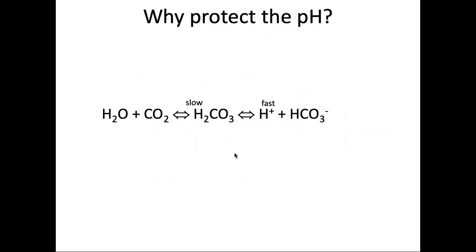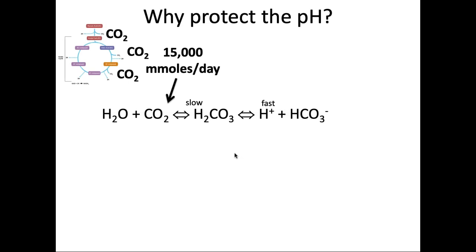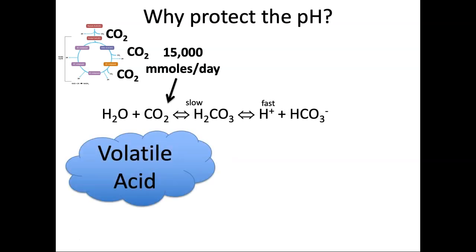Why do we protect the pH? Proteins can denature, cells can dysfunction, and the heart can go into dysfunction outside of normal pH. On a day-to-day basis, from the metabolism of fats and carbohydrates, we produce 15,000 millimoles per day of CO2. This is considered the volatile acid because CO2 can be dissolved into our plasma, and as it's transported to the lungs it's a gas that can be ventilated off. Because it's volatile, this part of the acid equation can be breathed away.